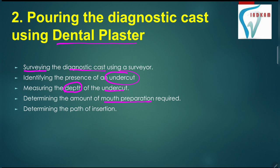We have to decide the path of insertion. In short, if any undercut is present in the residual alveolar ridge of a patient, then you have to prepare the mouth before preparing the denture. We have to plan a path of insertion for the denture as well.